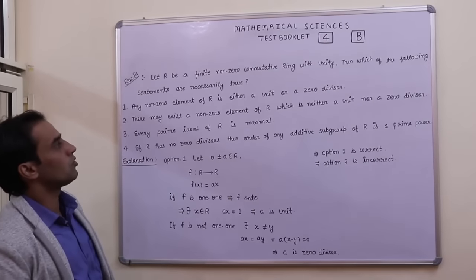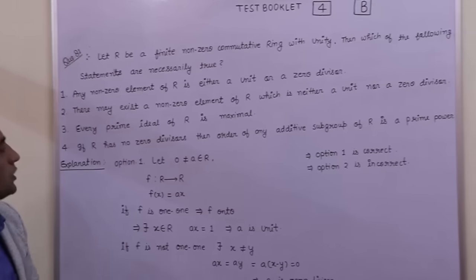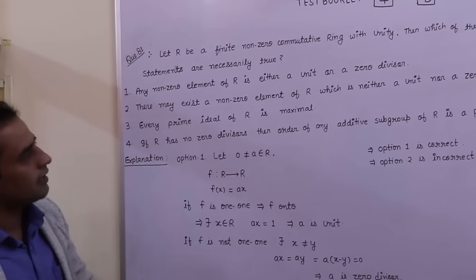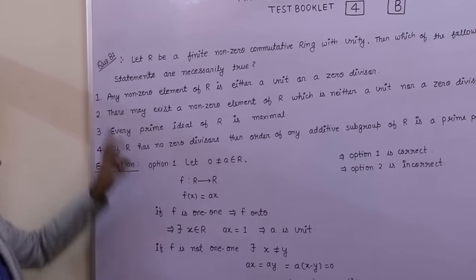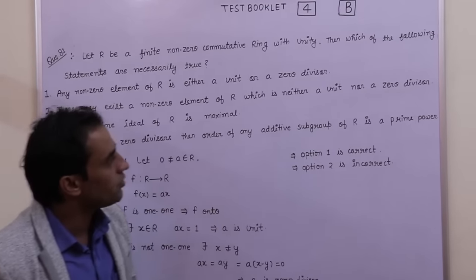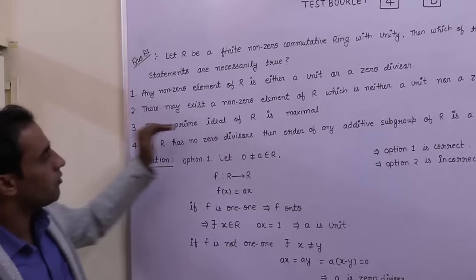Let R be a finite non-zero commutative ring with unity. Then which of the following is necessary? First option: any non-zero element of R is either unit or zero divisor. Second option: there may exist a non-zero element of R which is neither unit nor zero divisor. Third: every prime ideal of R is maximal. Fourth: if R has no zero divisor, then order of any additive subgroup of R is prime power.